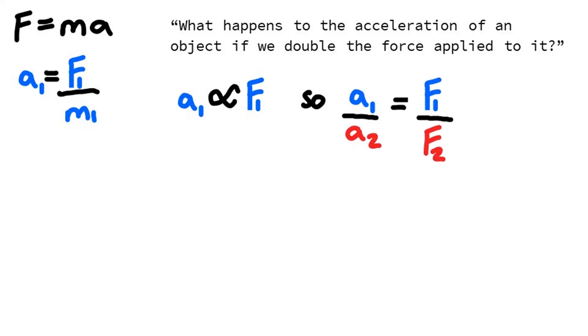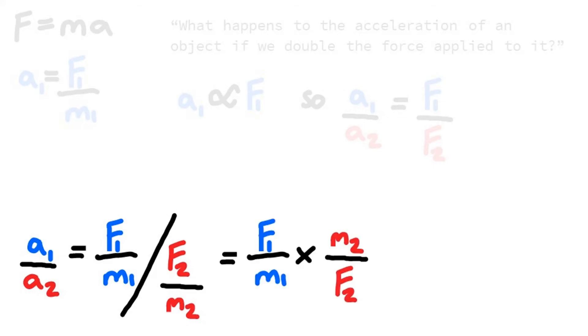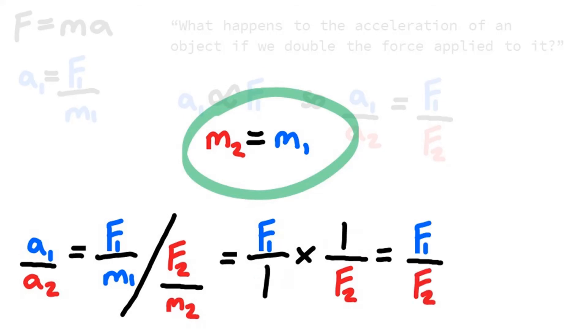Don't panic! I'll tell you where this has come from. a1 divided by a2 is equal to the expression for a1 divided by the expression for a2. Using our rules for algebra, this is just the same as f1 over m1 multiplied by m2 over f2, at which point we remind ourselves that the mass is unchanged, so m2 is equal to m1. They cancel each other out, giving us f1 over f2.